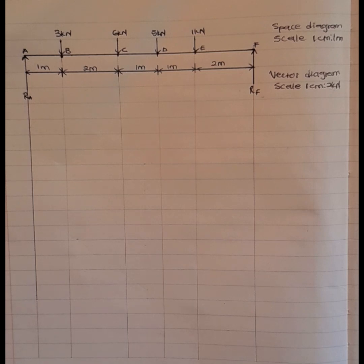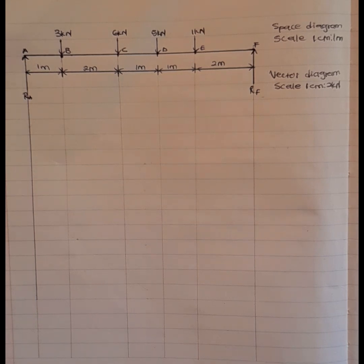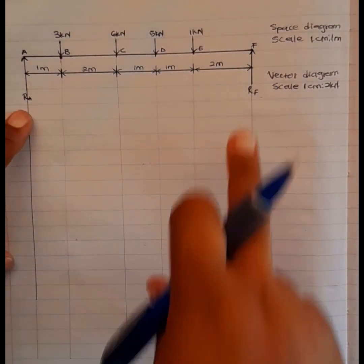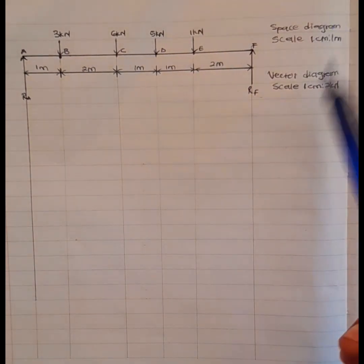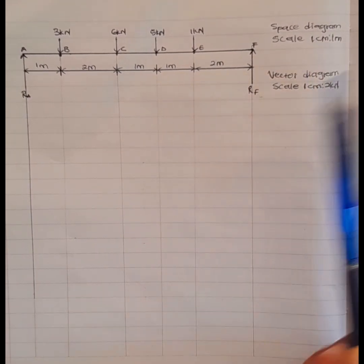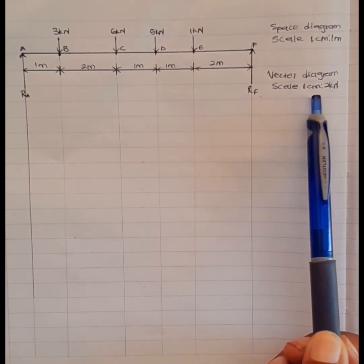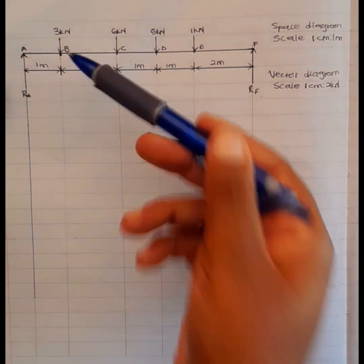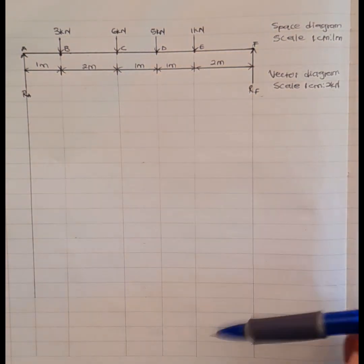Today we are going to determine graphically the magnitudes of reactions RA and RF. To determine these reactions graphically, we are going to use specified scales: a space diagram scale of 1 centimeter to 1 meter, and a vector diagram scale of 1 centimeter to 2 kilonewtons. We are going to start by arranging your forces downwards.